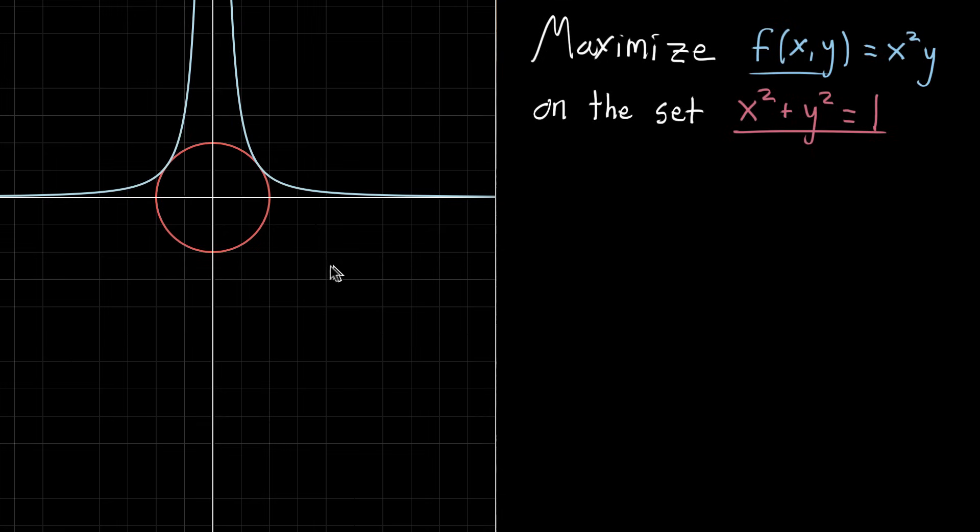And the way we were visualizing this was to look at the xy plane where this circle here represents our constraint, all of the points that make up this set x squared plus y squared equals 1.